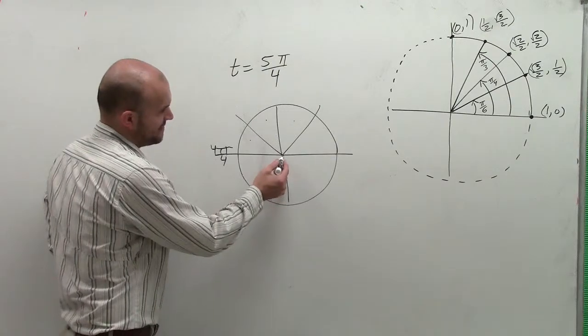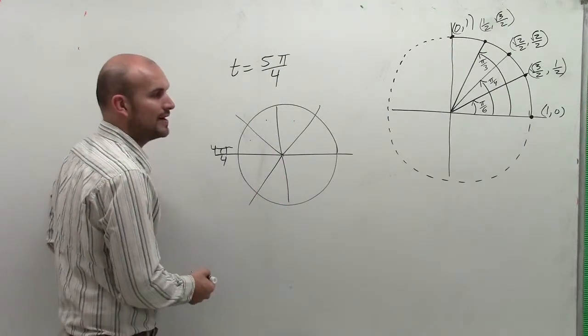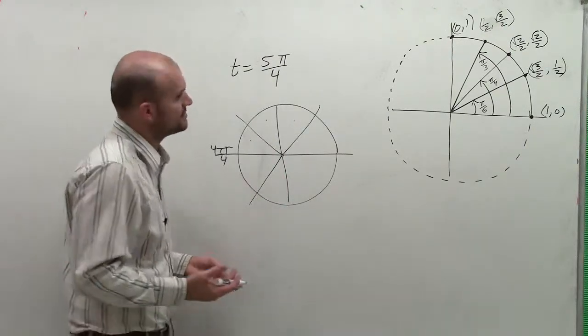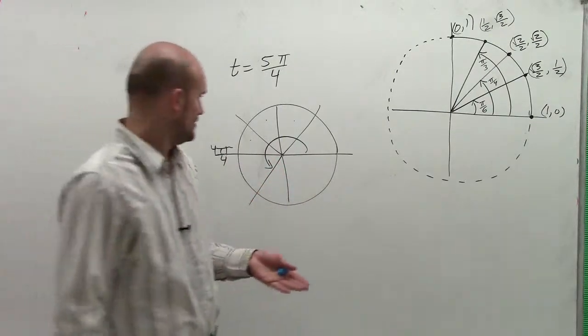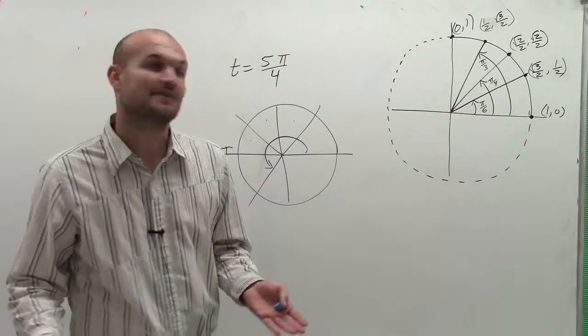Then, if I'm going to the fifth part, it's going to be right down there. So when I look at that and I say, all right, if all the way to here is 5π/4, let's take a look at it and see exactly what the difference is.